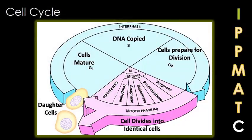The cell cycle is a process of growth and division that occurs in eukaryotic cells. The first section is interphase, which represents cell growth and has three sub-phases: G1, S, and G2. That's the blue in this picture. And then you have the actual division steps.